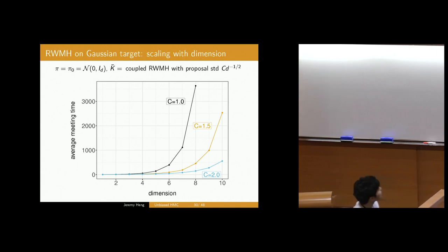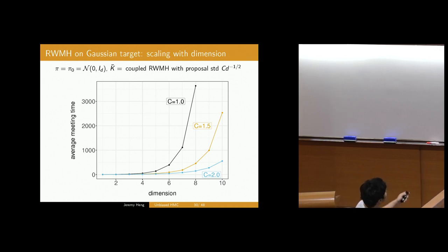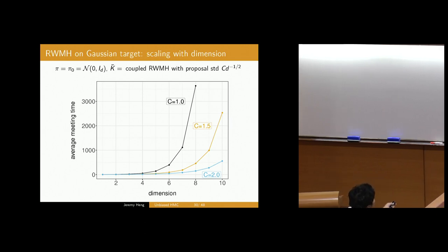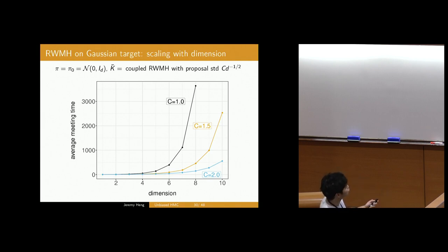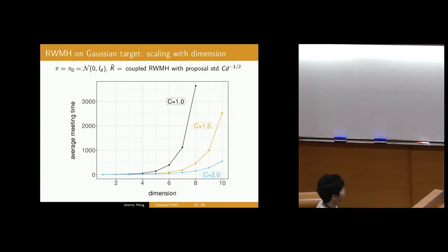Let's investigate how well the coupling behaves in high dimensions. Here I'm sampling from a standard normal distribution with chains started at stationarity and propagated according to coupled Random Walk Metropolis-Hastings with diffusion limit scaling to ensure stable acceptance probabilities as dimension goes to infinity. What you hope to see is stable meeting times as you increase dimension, but we don't see that — the meeting times seem to grow exponentially fast regardless of how you choose the scaling constant c. In some sense this plot motivated us to look at coupling different algorithms, in particular HMC.